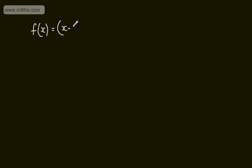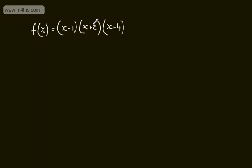An example might be x minus 1 multiplied by x plus 2 multiplied by x minus 4. We can see this is a cubic equation — we've got x times x times x, so the highest power is x cubed. We can also see that the constant is going to be 8, since minus 1 multiplied by 2 multiplied by minus 4 gives positive 8. We'll now write this in the form ax cubed plus bx squared plus cx plus d.